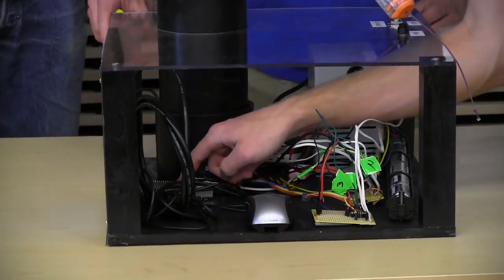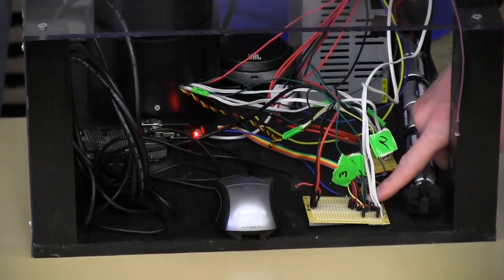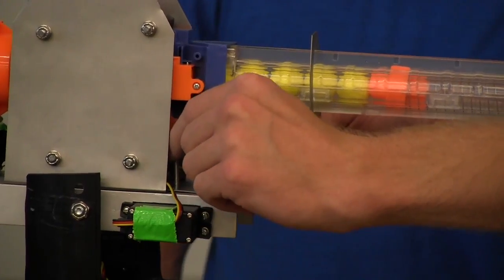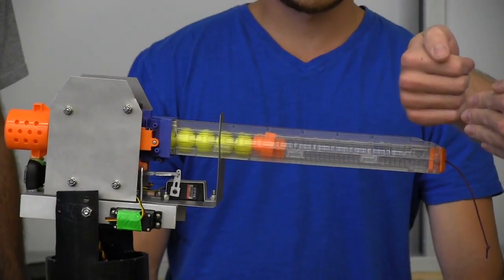This right here is our small ARM-based computer. It's called an O-Droid. And this is our PIC soldered down to a breadboard. The trigger has a gate. If there's balls in a row, it lets one through and catches it, then stops and opens it up so that only one ball is in the firing area at a time.